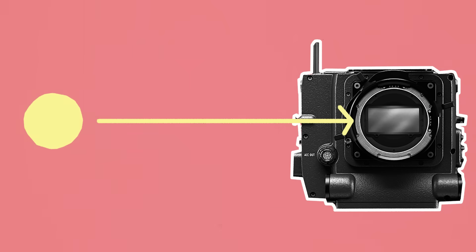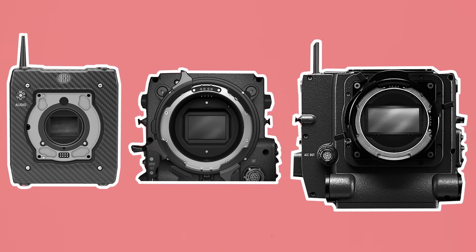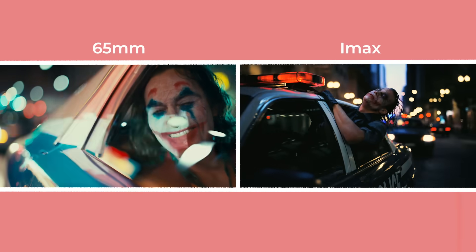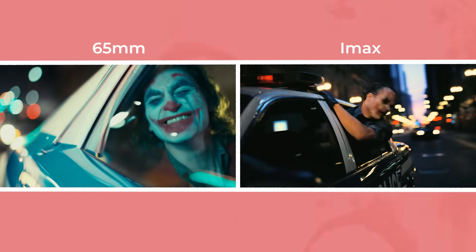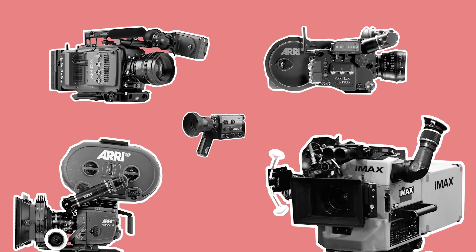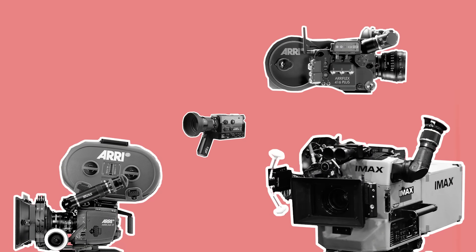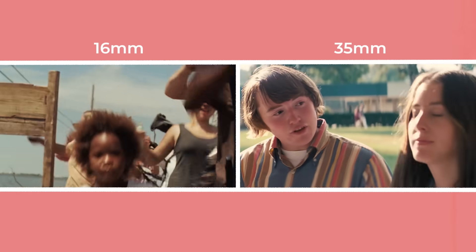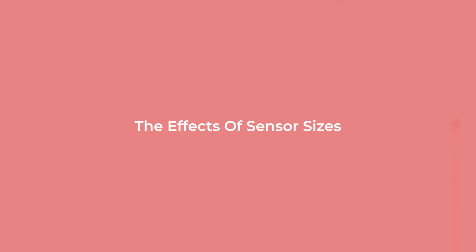The sensor or film plane of the camera is the area that light hits to record an image. The size of this area can vary a lot depending on the camera, with each sensor size or format having a subtly different look. In this video I'll try to simplify it a bit by going over the five most common motion picture formats and discussing the effect that different sensor sizes have on an image.